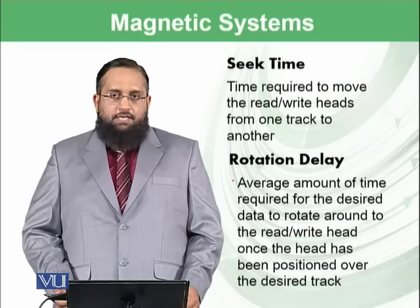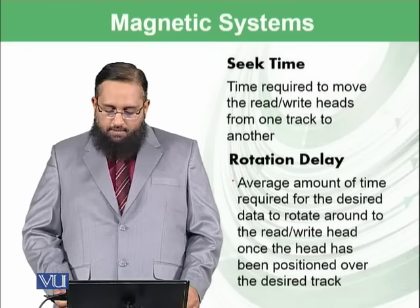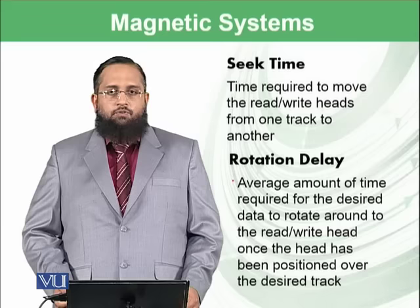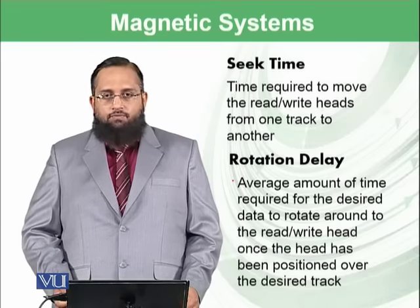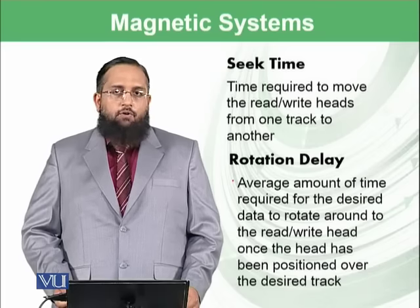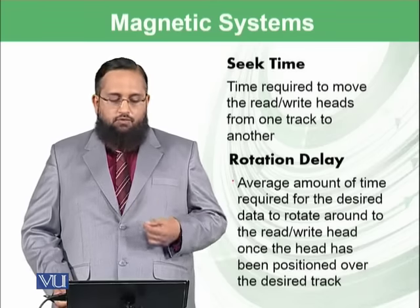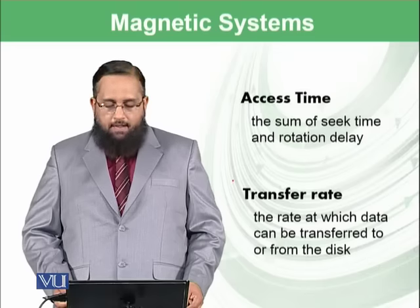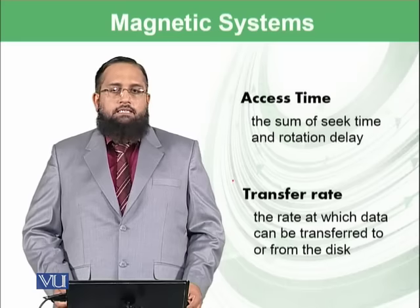Rotation delay is the average amount of time required for the desired data to rotate around to the read-write head once the head has been positioned over the desired track. For example, once your read-write head is on the right track, you still need to locate which data to fetch — that rotation time is the rotation delay. When both seek time and rotation delay are added together, they form the access time, which should be lower for the disk to be considered good.